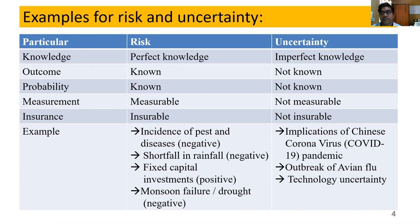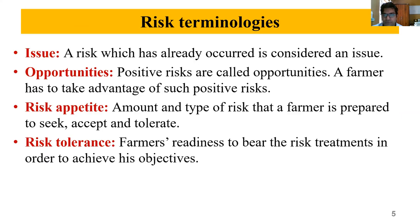To summarize: risk means the outcome is known and the probability associated with the outcome is known. Uncertainty means the outcome as well as the probability associated with the outcome is not known. Therefore, we can measure and insure risk, but we cannot measure or insure uncertainty. Examples: the Chinese coronavirus pandemic is uncertainty; pest and disease that regularly occur is a risk.